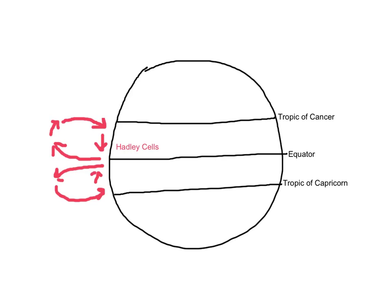These convection currents are known as Hadley cells, and if you're looking for something interesting, look up the term horse latitudes, and also look up the origins of the name horse latitudes, and I think you'll find it a sad yet interesting story.